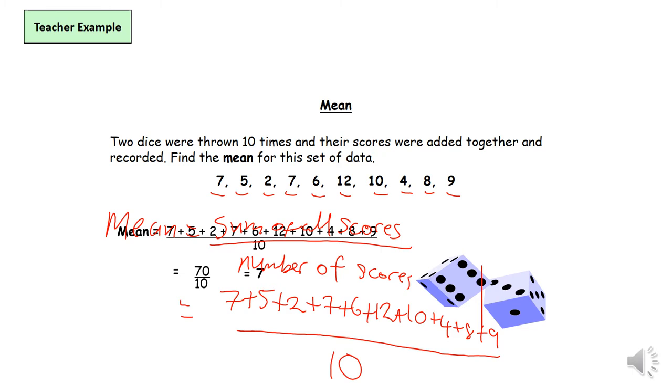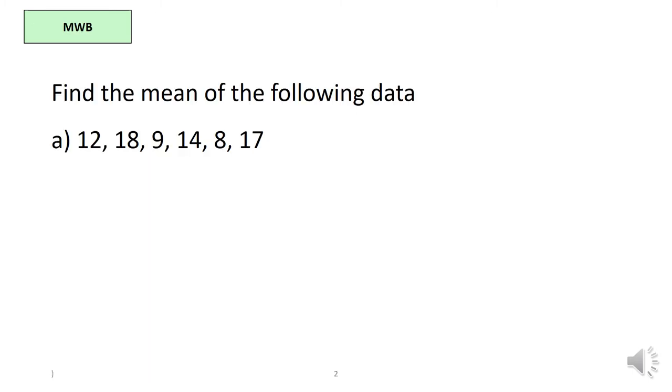That will give us seventy over ten which is seven. So what I would like you to do is to find the mean of the following data and once you're finished return to the video and I'll show you how to do it.